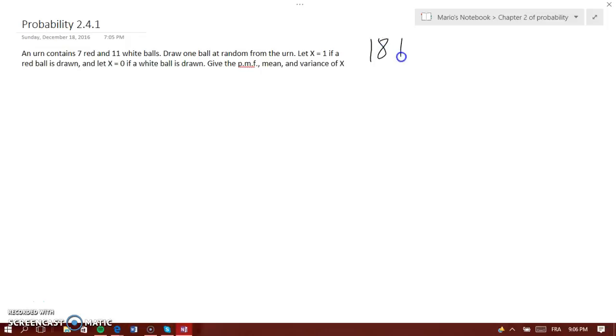So we know that there are 18 balls in total, so we need to find the PMF. The probability of drawing x equals 1, which is a red ball, would be 7 out of 18, where x equals 1. Then for a white ball it would be 11 out of 18, where x equals 0. So that's the PMF.